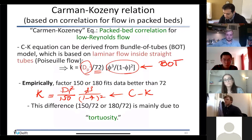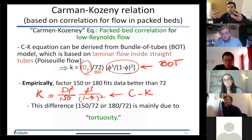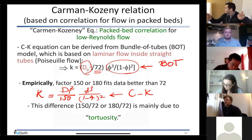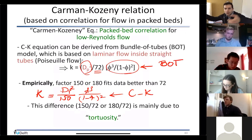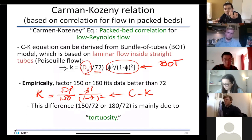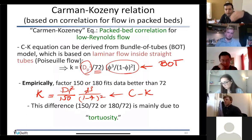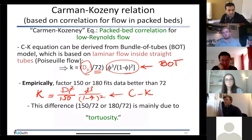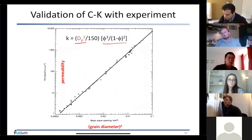We know permeability is proportional to grain size squared. If you have bigger grains — like river stones put in a tank — fluids flow through them much more easily than through fine sand. The same holds for porosity. We've been assuming laminar flow, no-slip condition, and Newtonian fluids throughout this analysis.